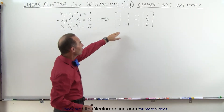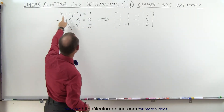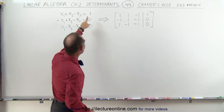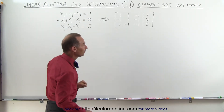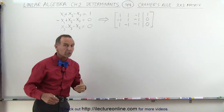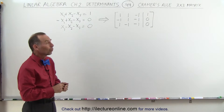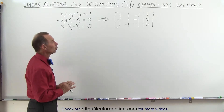Here we have the augmented matrix representing the coefficients of the three variables, with the constants on the right side of the equal sign. Of course we can use different techniques to solve this, but here we're going to use Cramer's rule.